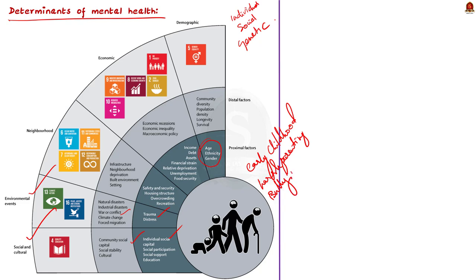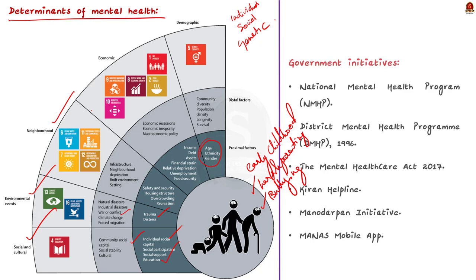Finally, an individual's social and emotional skills and attributes, as well as positive social interactions, quality education, decent work, safe neighborhoods and community cohesion — all these can enhance the mental health of an individual. Now let's move on to the initiatives of the Indian government to ensure mental health of the people is taken care of.